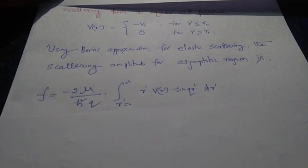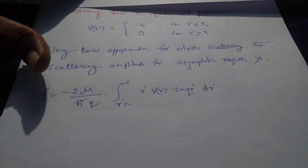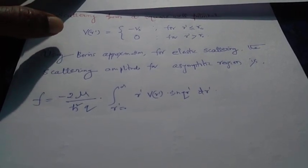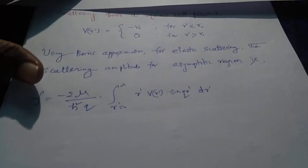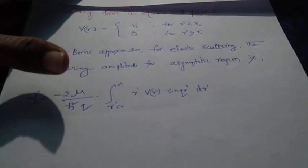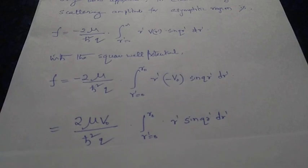The expression for scattering amplitude obtained using the Born approximation for the asymptotic limit is given by f equals minus 2μ/ℏ² times 1/Q, times the integral from r'=0 to infinity of r' V(r') sin(Qr') dr'. Substituting V(r') equals minus V-naught for r' less than or equal to r-naught, we can remove minus V-naught outside the integral as a constant.